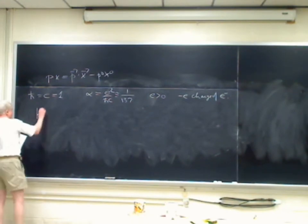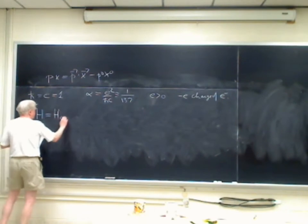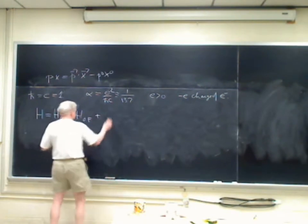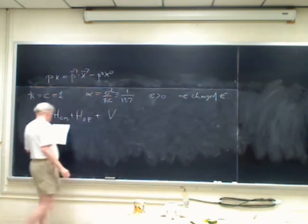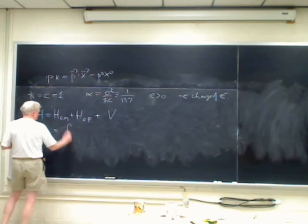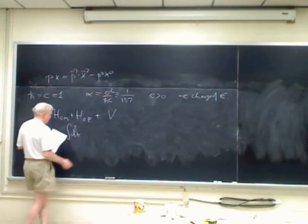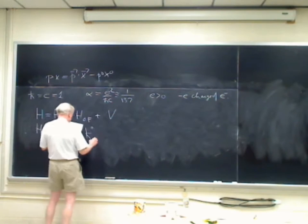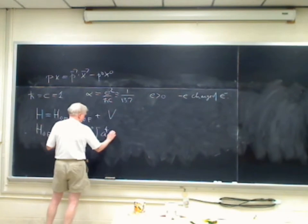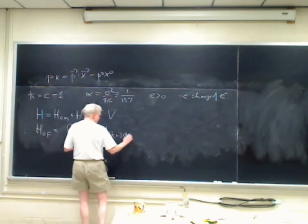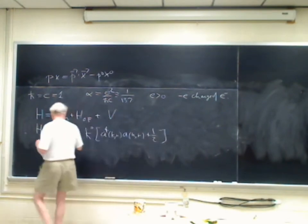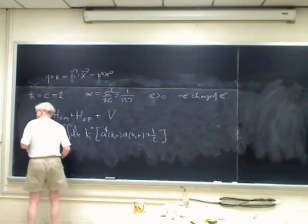The Hamiltonian I'm going to take as H0m plus H0f plus V. H0f is the one we already know about; in continuum form it's the integral d³K of K0 times A-dagger of K,R times A of K,R plus one-half, summed over the two polarizations — these are the annihilation operators for photons.